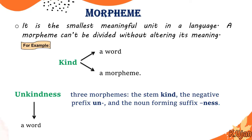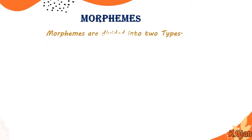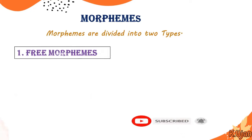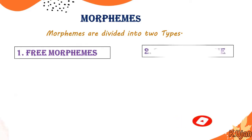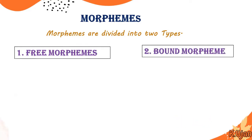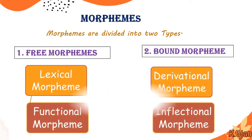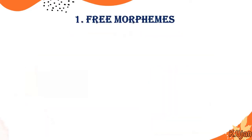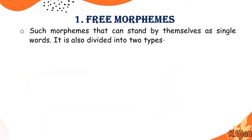Here we are going to talk about types of morphemes. Morphemes are divided into two types: number one, free morphemes, and number two, bound morphemes. Free morphemes consist of lexical morphemes and functional morphemes. On the other hand, bound morphemes are divided into derivational morphemes and inflectional morphemes. Let's talk about all these types one by one.